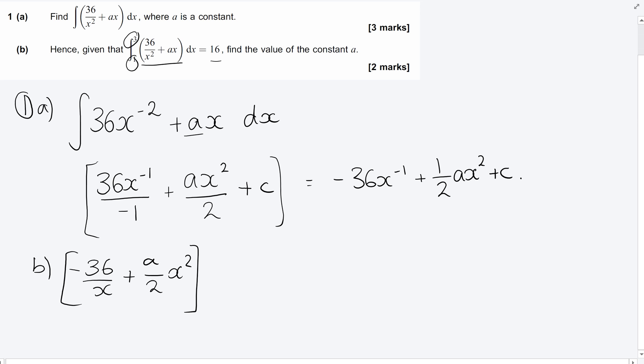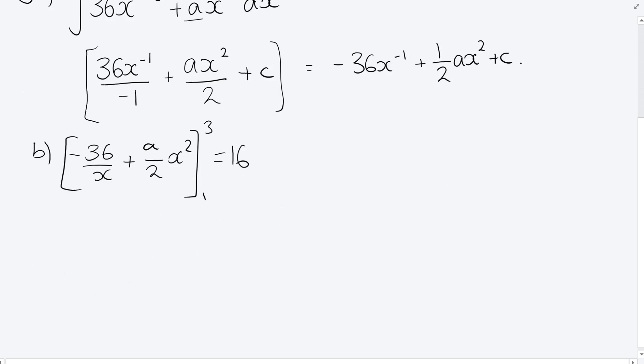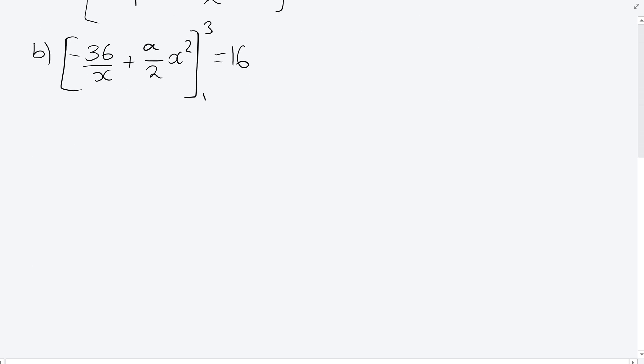So we're now subbing in our limits, one and three, and when we do that, we're supposed to be getting 16. So let's just give myself a bit more room here and start my substitution. So it's minus 36 over three plus a over 2, 3 squared. So a over 2 times by 3 squared. And from that I'm subtracting minus 36 over 1 plus a over 2, 1 squared.